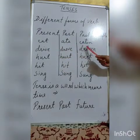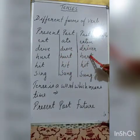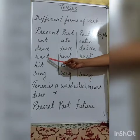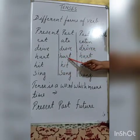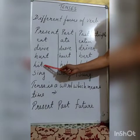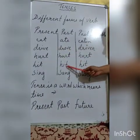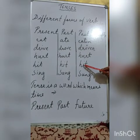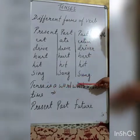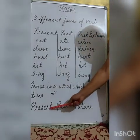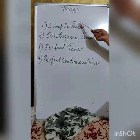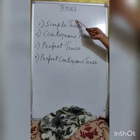Same with drive, drove, driven. Hurt — hurt — hurt. All the three forms of hurt are the same. There is no such word as 'hurted.' We write hurt, and the past tense of hurt is hurt, and the past participle is also hurt. Same with hit — the base form, past form, and past participle of hit are all hit. So tenses are actually a word which means time, and time is divided into three: present, past, and future.